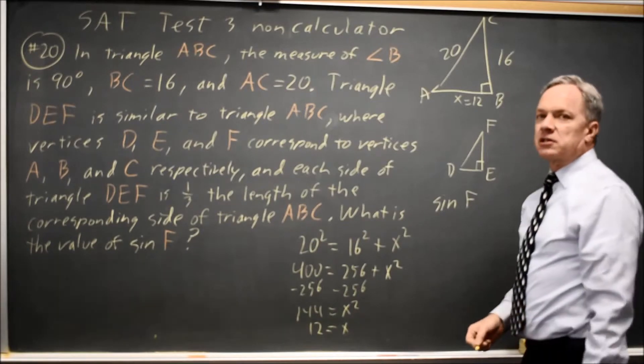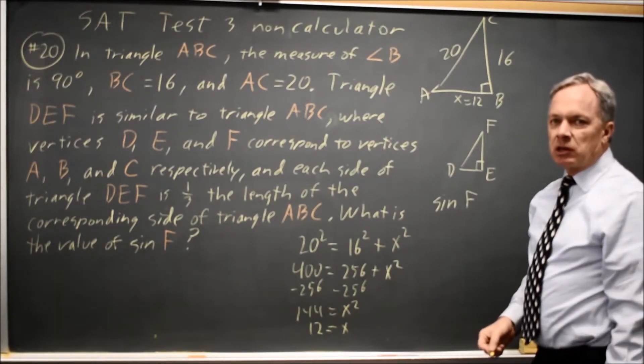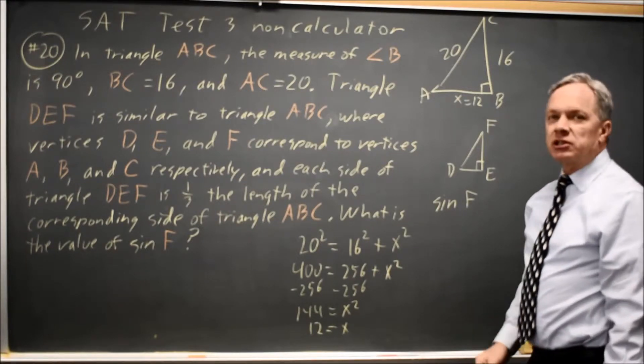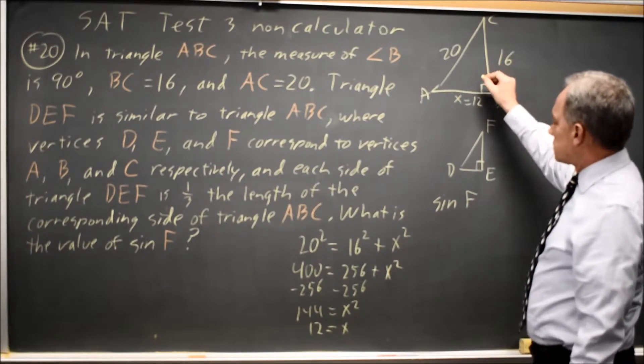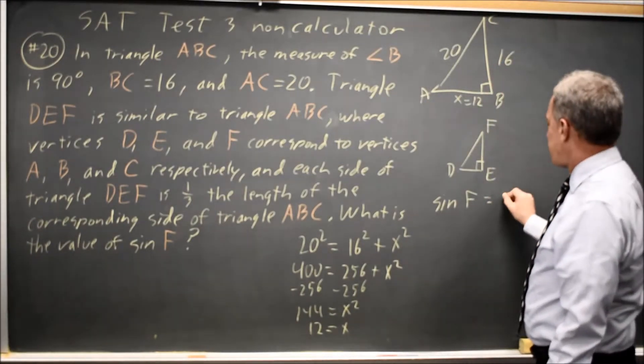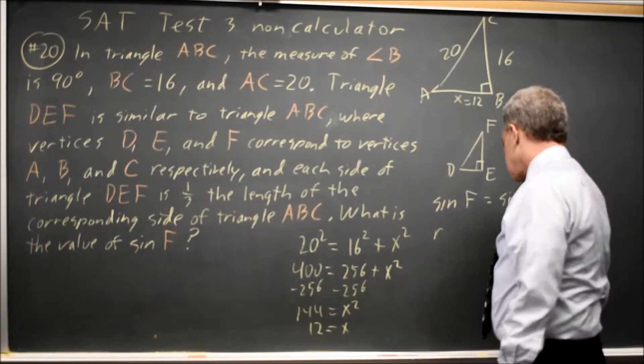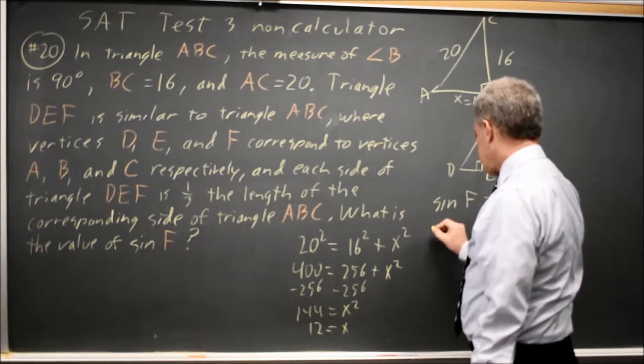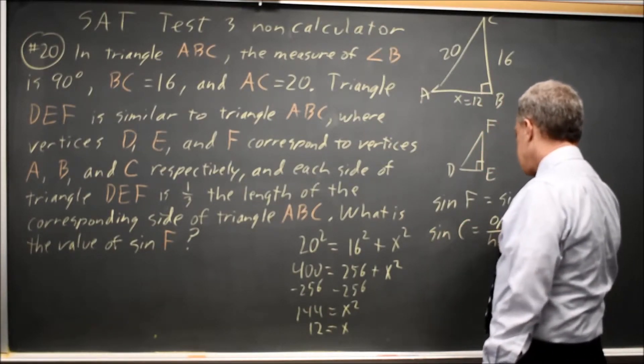That gives us the three sides for the second triangle, but since trigonometric functions are equal for similar triangles, the sine of angle F is equal to the sine of angle C. And we recall that the sine of an angle is equal to the opposite side over the hypotenuse.